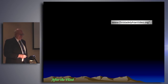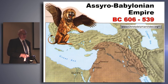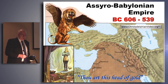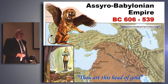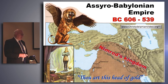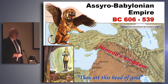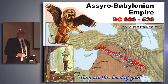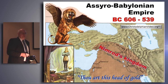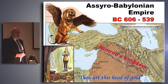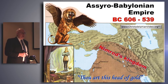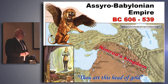Here we've got the Assyro-Babylonian Empire from 606 BC, the rise of Nebuchadnezzar, right down to its overthrow by Cyrus the Persian in 539 BC. While Jehoiakim, the king of Judah, was foolishly and blasphemously carving up the scroll of Scripture that Jeremiah had dictated to Baruch — read out to the Jews in the fifth year of Jehoiakim — in that very year, while God's own people were rejecting his word, he gave a dream to the greatest monarch of the time, Nebuchadnezzar, and gave him the revelation of Daniel chapter 2.